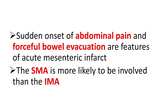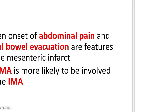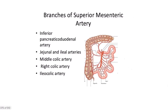Sudden onset of abdominal pain and forceful bowel evacuation are features of acute mesenteric infarct. The superior mesenteric artery is more likely to be involved than the inferior mesenteric artery. Let's look at the different branches of the superior mesenteric artery and their territory.